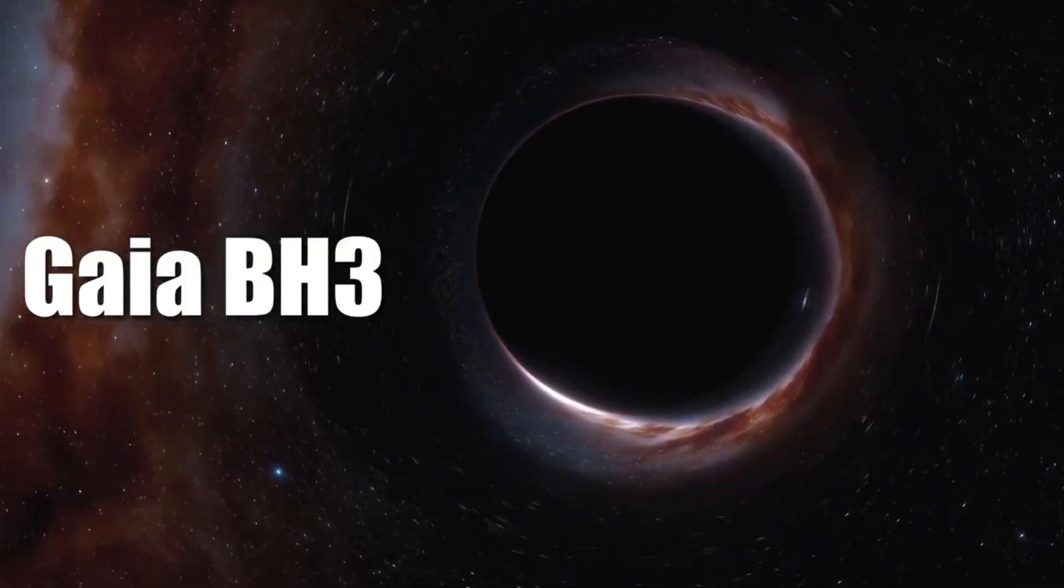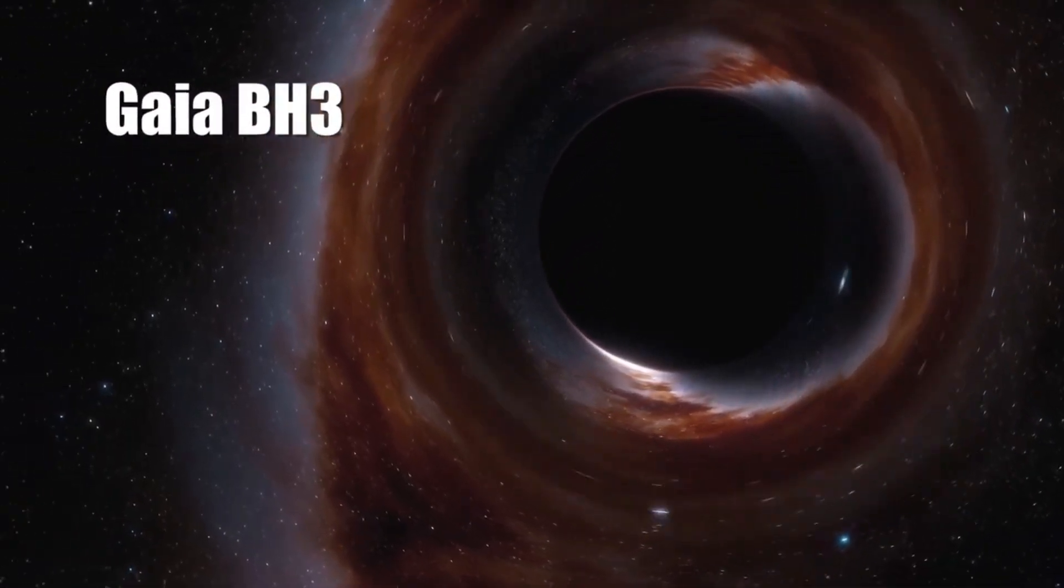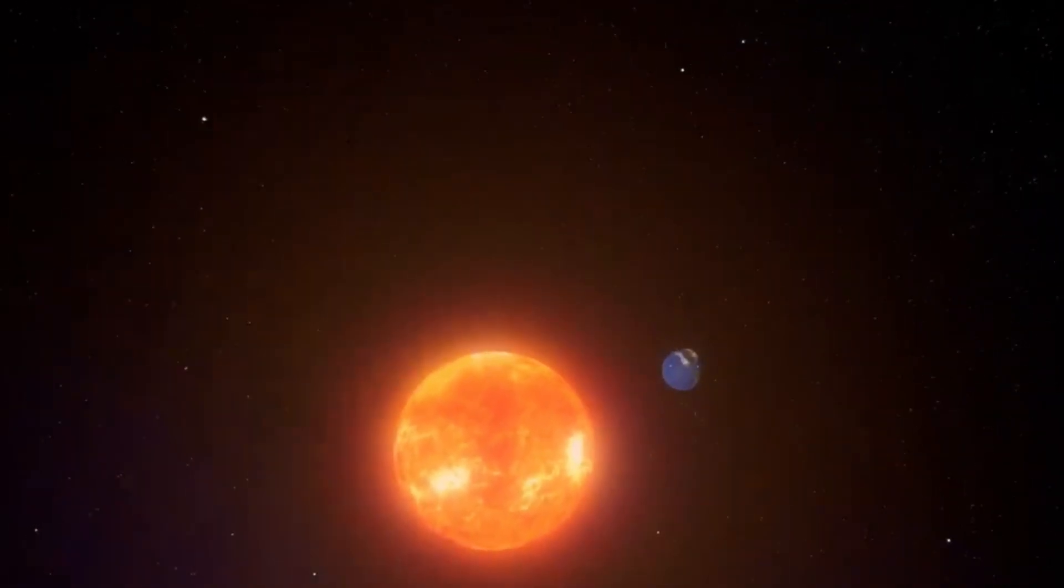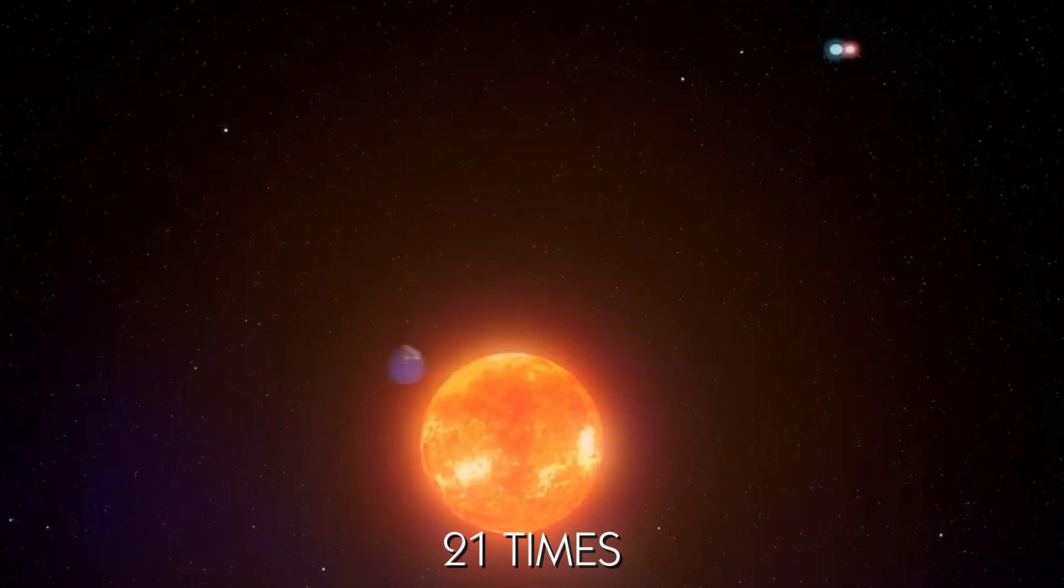Gaia BH3, the largest stellar black hole in our galaxy, also formed from the death of a massive star. Before this discovery, the largest known stellar black hole in the Milky Way was Cygnus X1, in the Cygnus constellation. It was estimated at about 21 times the sun's mass.